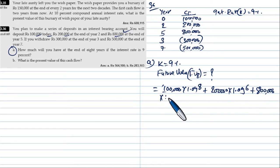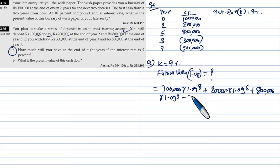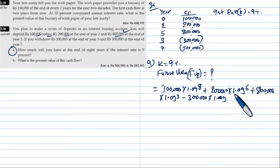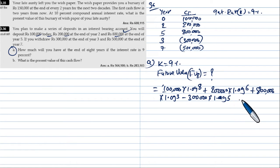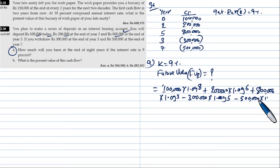Calculating future value at year 8: we apply 8 minus 5 equals 3, so the deposit of 3 lakh is compounded by 1.09 to the power of (8−3) = 5. The 5 lakh withdrawal at year 7 is adjusted by 1.09 to the power of (8−7) = 1.